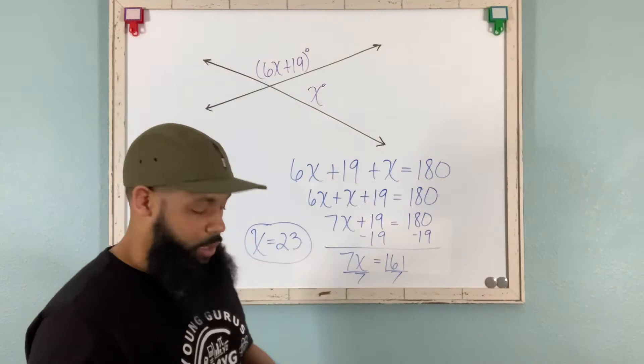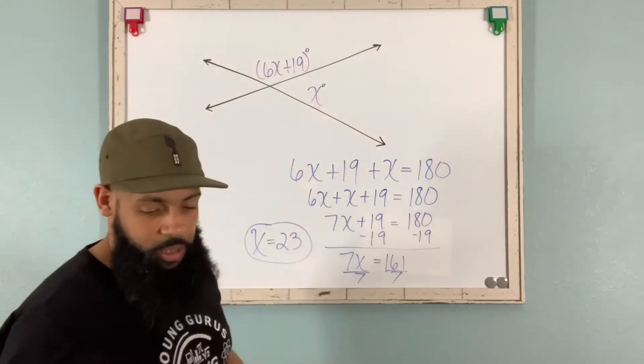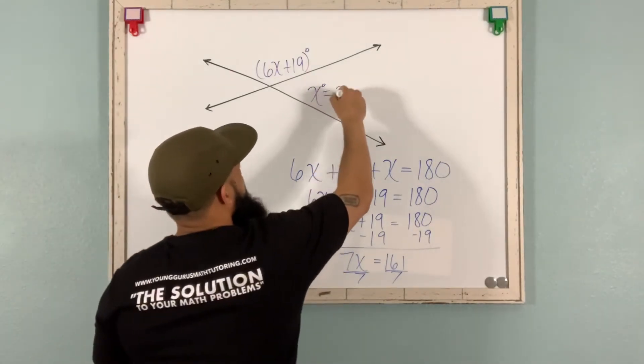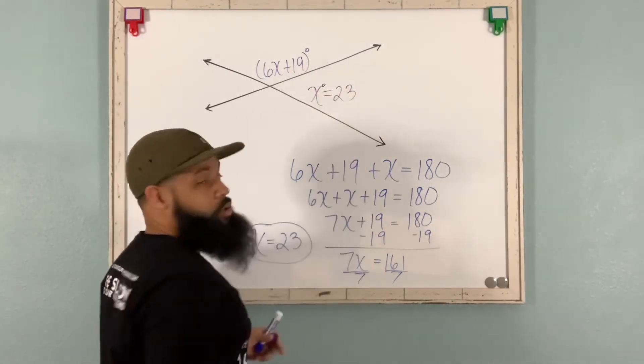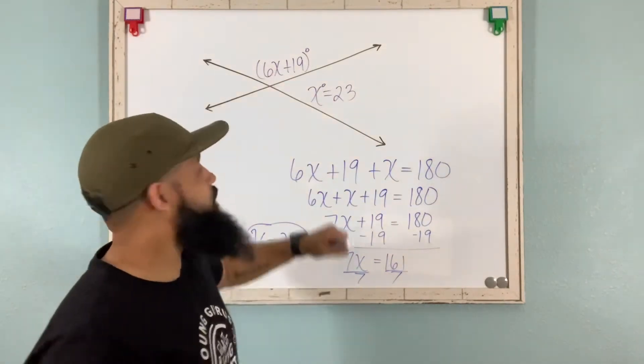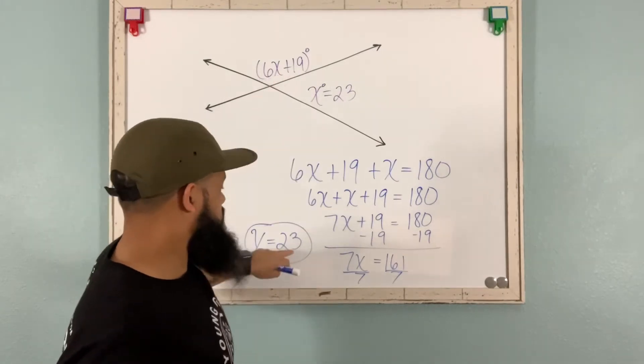All right, so x equals 23. Now we can take this a little further. That tells us that this angle is 23 degrees. And then we can also, if we wanted to, we can make this an extension. We can see, okay, well, how many degrees is this angle? Well, we could just plug in the x with 23.